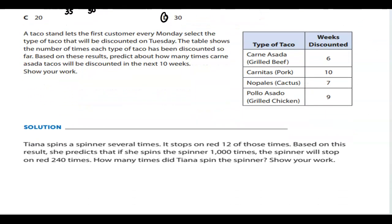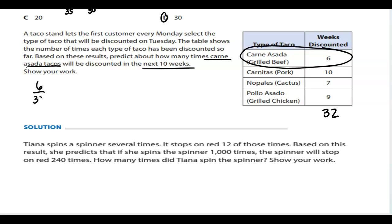A taco stand lets the first customer every Monday select the type of taco that will be discounted on Tuesday. The table shows the number of times each type of taco had been discounted so far. Based on these results, predict about how many times carne asada tacos will be discounted in the next 10 weeks. First, get a total. Adding up 6 plus 10 plus 7 plus 9, we have 32 total. So carne asada is currently sitting at 6 out of 32.